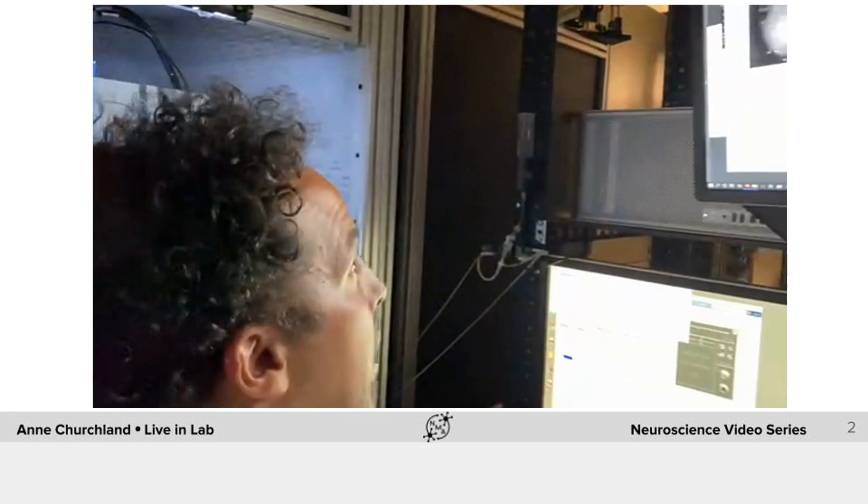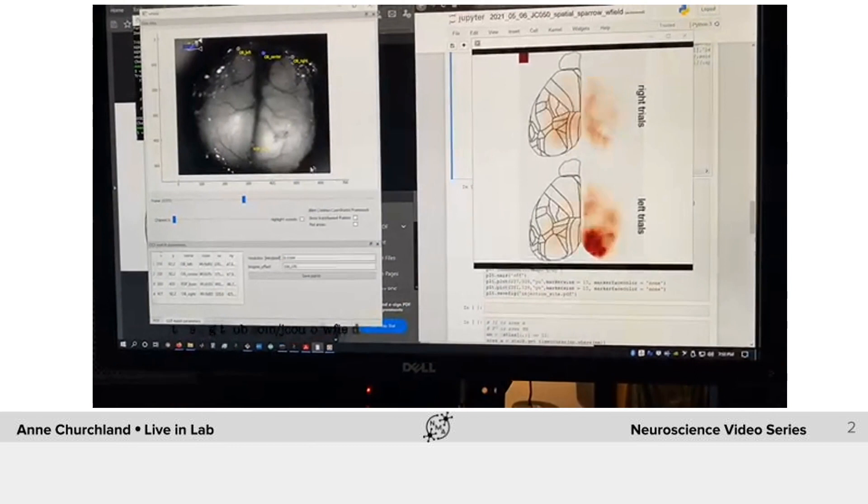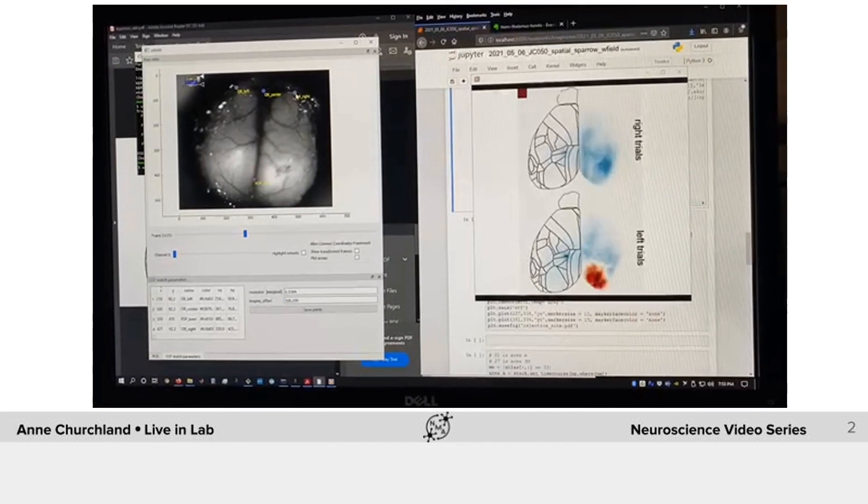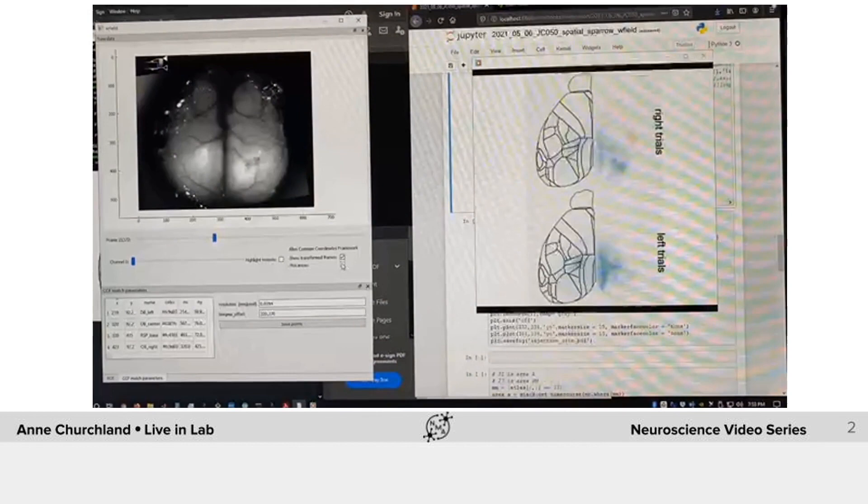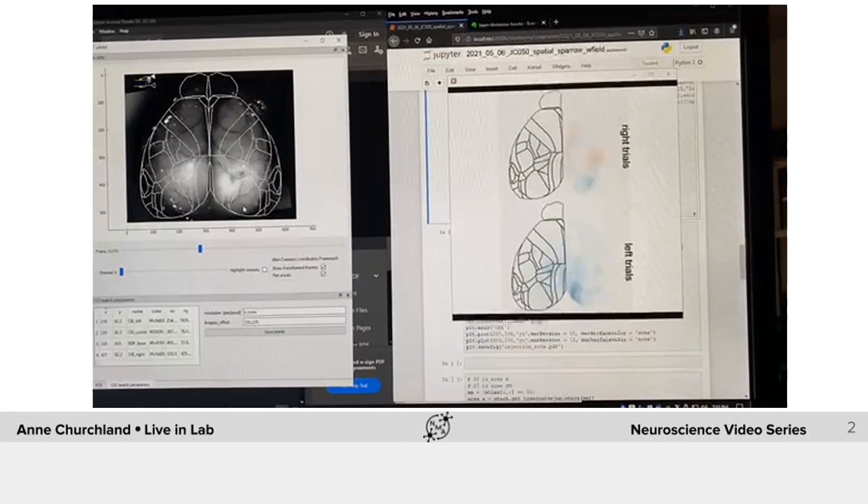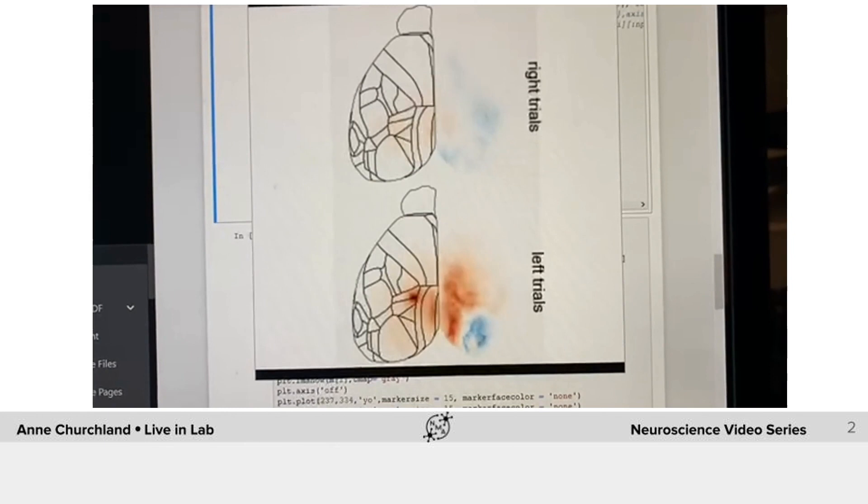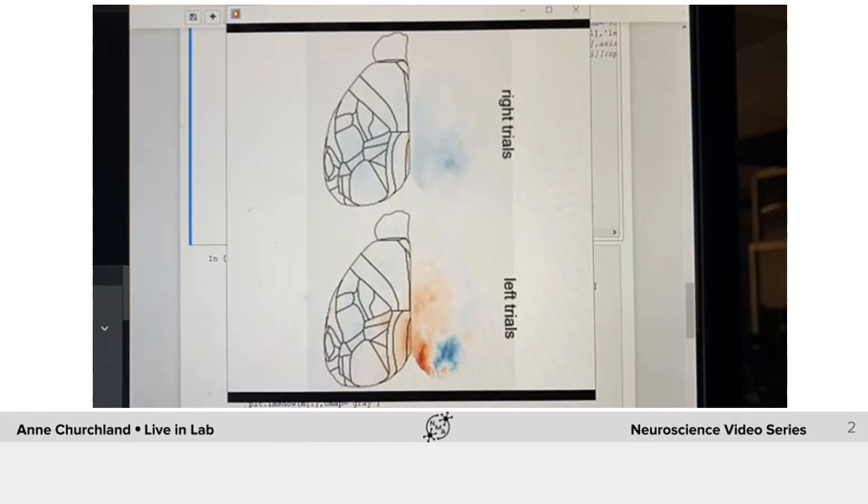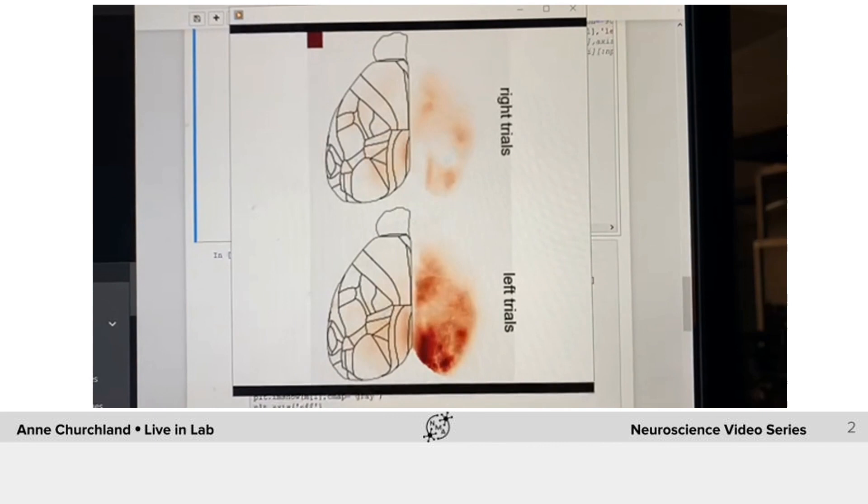Now, once we collect data, this would be an example of how these data look like, where you can see the whole dorsal cortex of the mouse. We can then use skull landmarks to align a reference frame like the Allen Atlas and identify different brain areas. This would be an example over here on the right of a mouse performing a decision-making task. And we can see that there's activation on left trials in the right part of the brain.